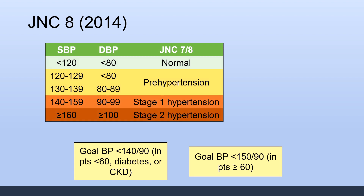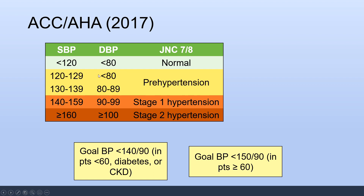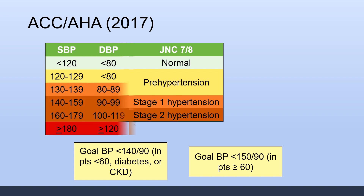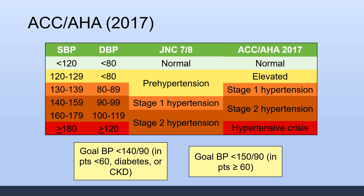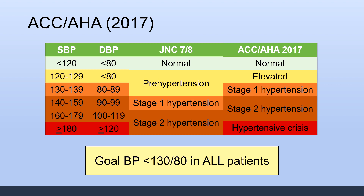With all these new studies, we've started to see a change in guidelines as well. The JNC-8 from 2014 has been compared against the 2017 ACC/AHA guidelines, which used the SPRINT trial as a major basis. The new diagnostic cutoff for hypertension was changed to 130 systolic — the first change in blood pressure diagnostic cutoffs in 14 years. Additionally, the new guidelines recommend a goal blood pressure of less than 130 over 80 in all patients.